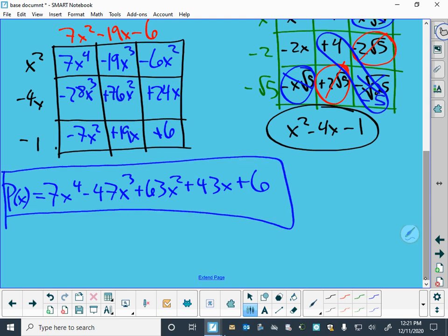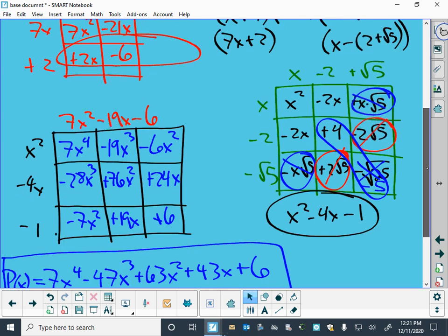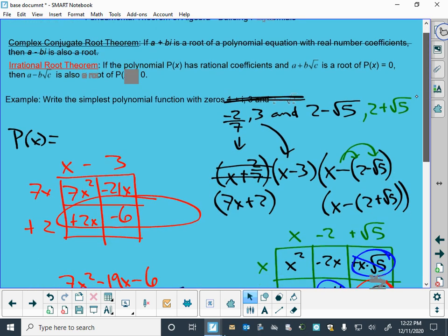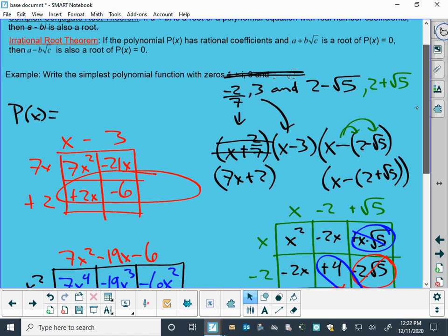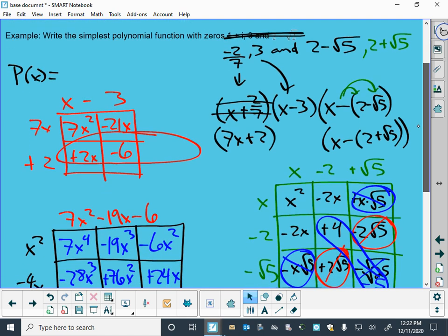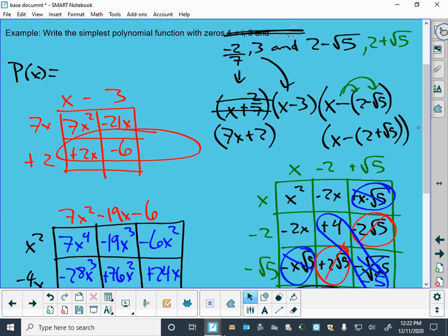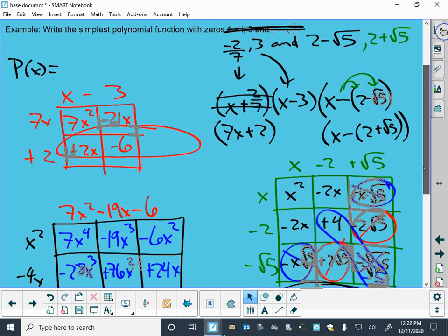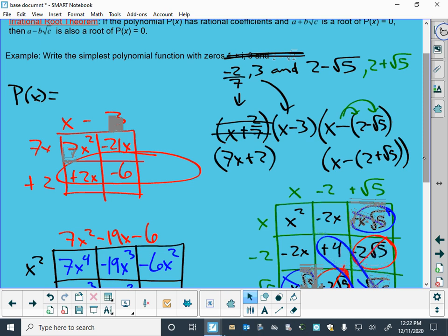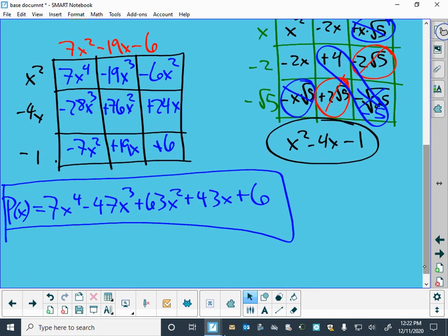This will have the listed roots. If I wanted to graph that, I would expect to see this crossing the x-axis in four places. Once at 3, that was a nice one. Once at just a little bit to the left of zero. The 2 minus root 5 is pretty close to that because root 5 is just a little bit bigger than 2. So, 2 minus a number a little bit bigger than 2 is pretty close. And 2 plus the square root of 5 is something a little bit to the right of 4.